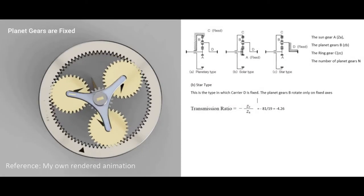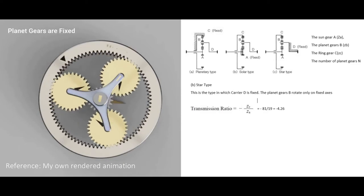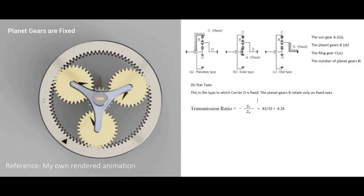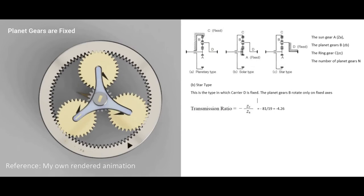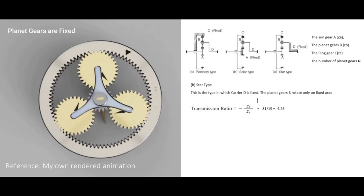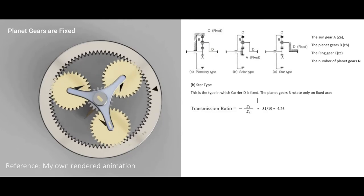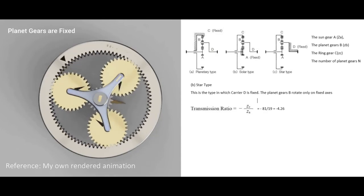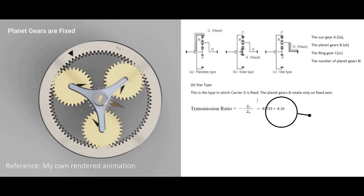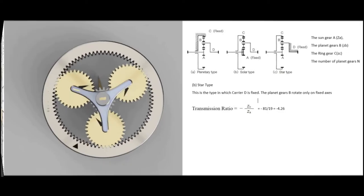The star type. This is a type in which the carrier D is fixed, which also means planet gears cannot rotate in their own axis. In a strict definition, this train loses the features of the planetary system and it becomes an ordinary gear train. The sun gear is an input axis and the internal gear, which is also called the ring gear, is the output. The calculated transmission ratio here is minus 4.26.